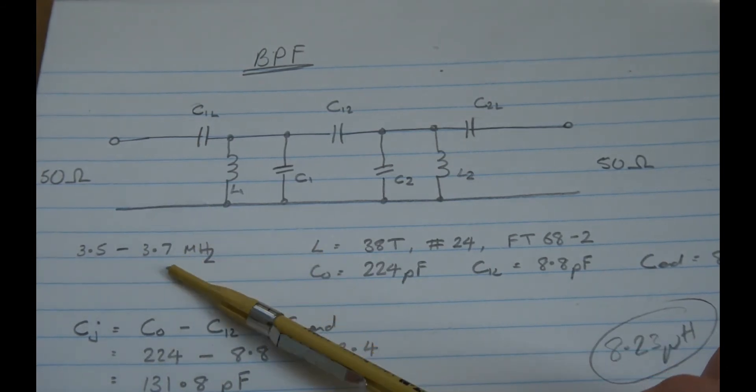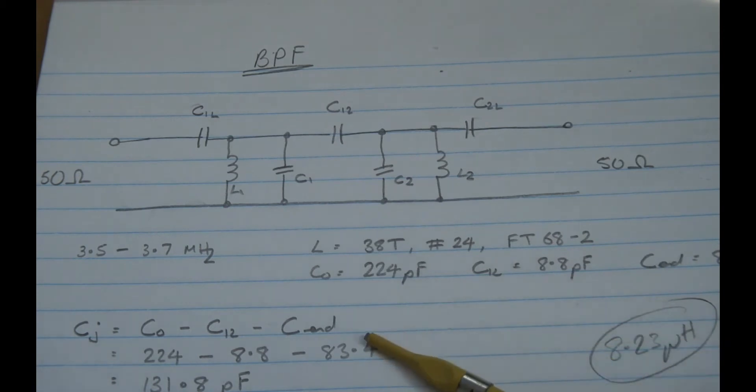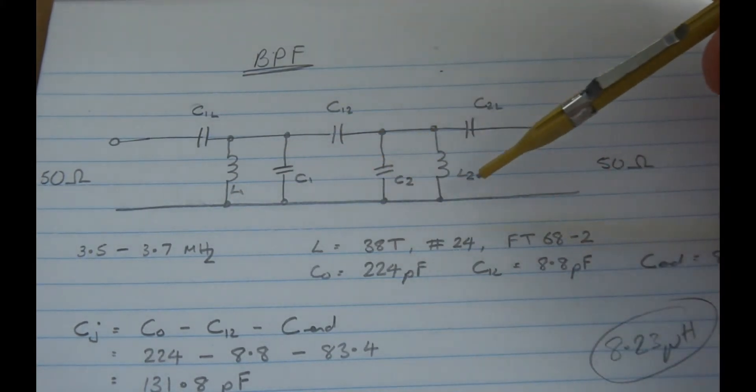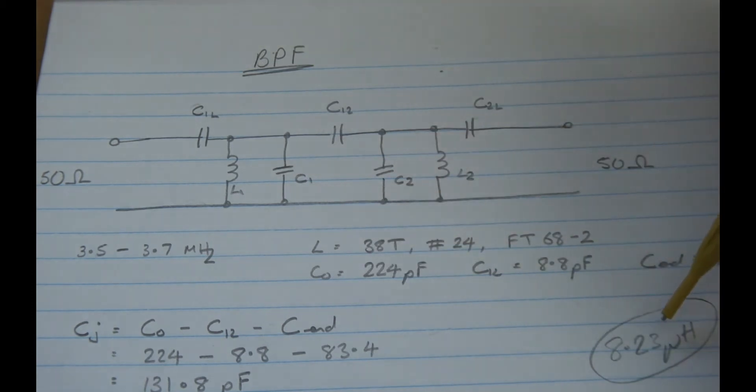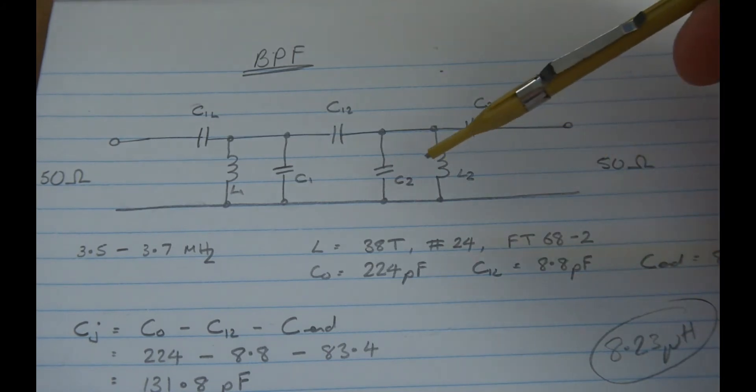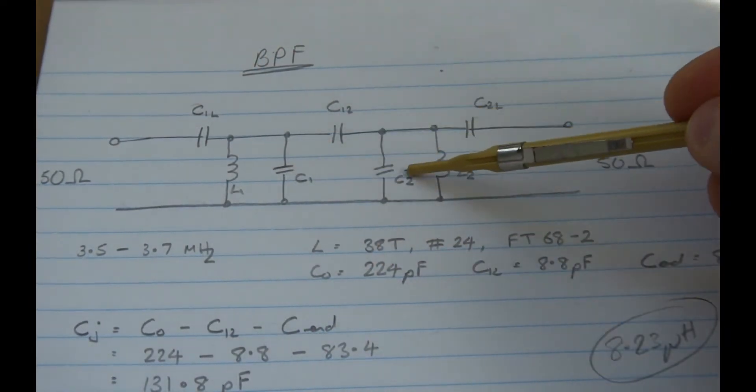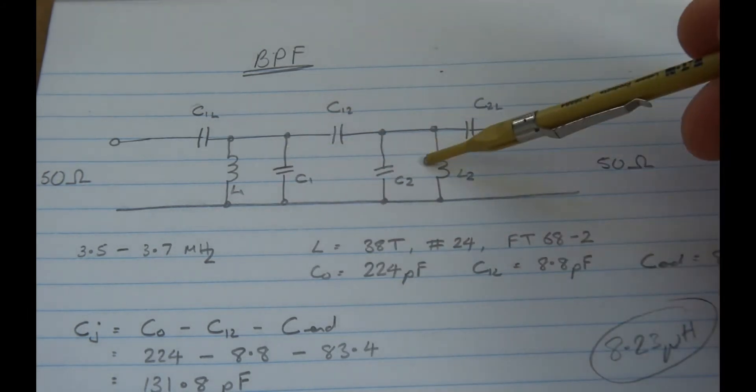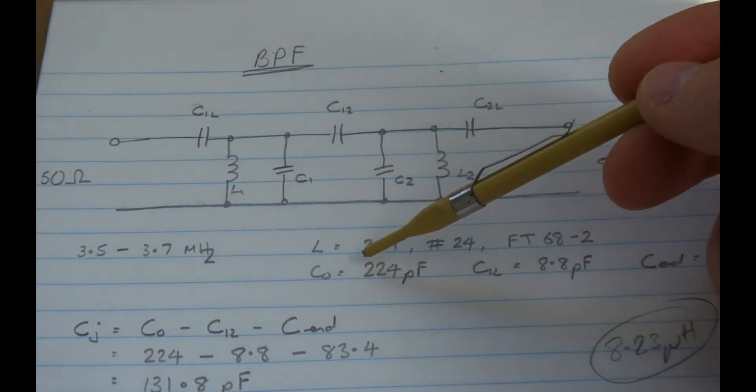I'm going to notionally use from the back of the book a 3.5 to 3.7 megahertz filter, and then we'll just look at modifying that or simulating it and some modifications to that one. So when you look at the calculations in the back, in order to make this filter here, it needs two inductors. They are an FT-68-2 using number 24 wire, 38 turns each. And if you do the calculations on that, it works out to be about 8.23 microhenries per coil. And then what it gives you is a very simple formula here for working out this capacitor and this capacitor. These three are given to you. In this particular case, the one that couples the two tank circuits is 8.8. The two end capacitors are 83.4. And they give you an overall capacitance of 224 picofarads.